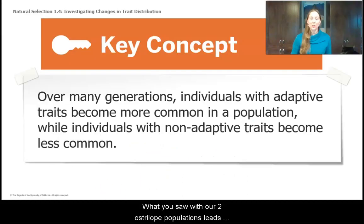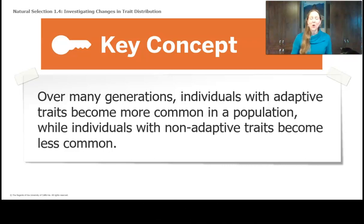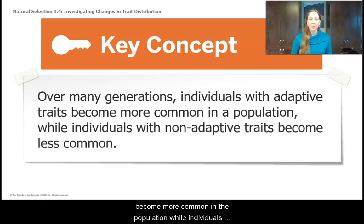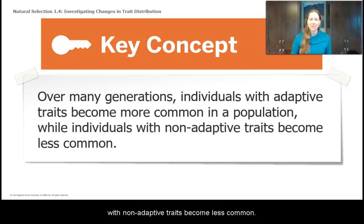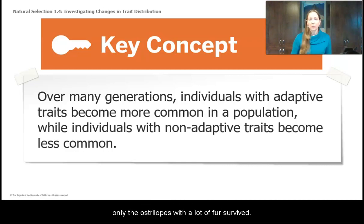What you saw with our two ostrilope populations leads us to two more key concepts. Go ahead and record these wherever you're keeping track of your natural selection key concepts. Over many generations, individuals with adaptive traits become more common in a population, while individuals with non-adaptive traits become less common. You saw this in population A, where there was a lot of variation in the population at the beginning, but by the end, only the ostrilopes with a lot of fur survived.